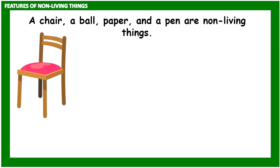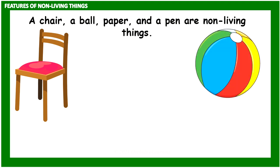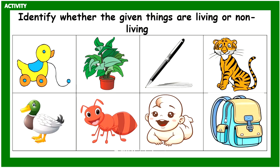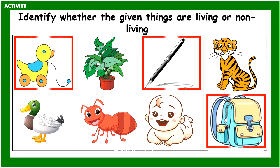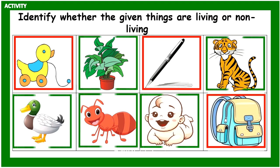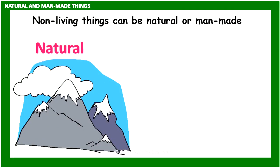A chair, a ball, paper, and a pen are non-living things. Identify whether the following things are living or non-living. A toy, pen, and school bag are non-living things. A plant, tiger, duck, and a baby are living things. Very good! Non-living things can be natural or man-made.